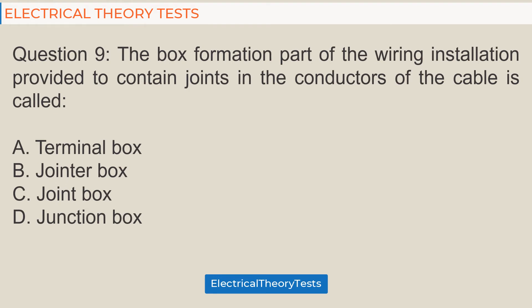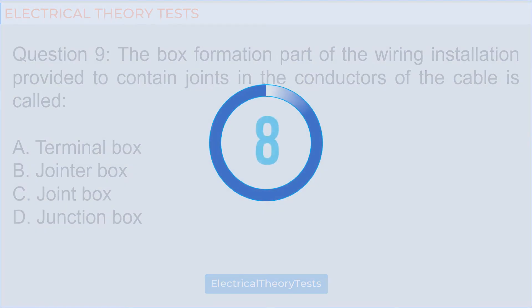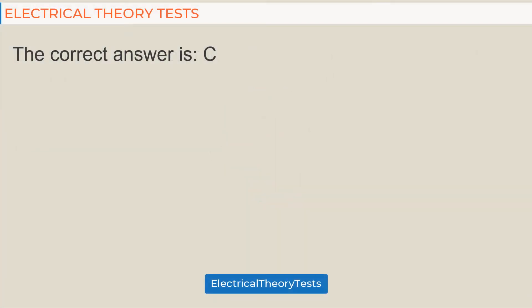Question 9: The box formation part of the wiring installation provided to contain joints in the conductors of the cable is called: A: Terminal box, B: Jointer box, C: Joint box, D: Junction box. The correct answer is C.